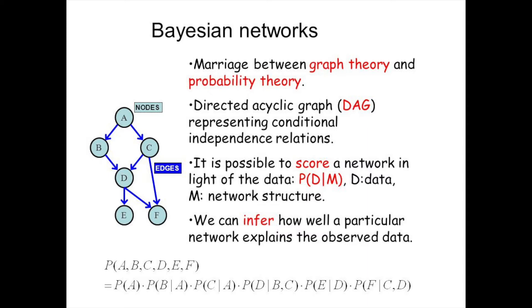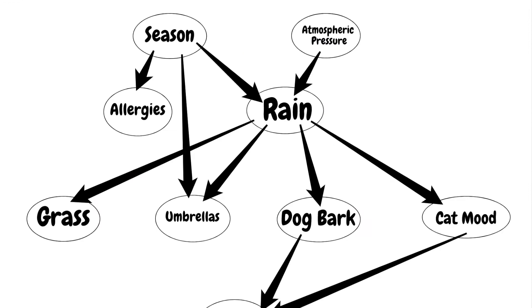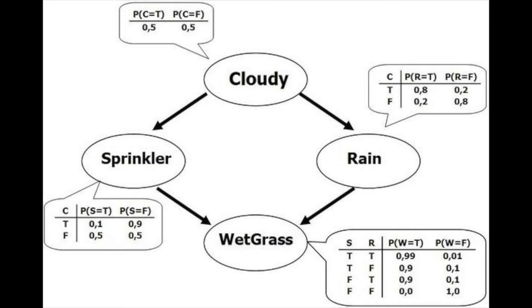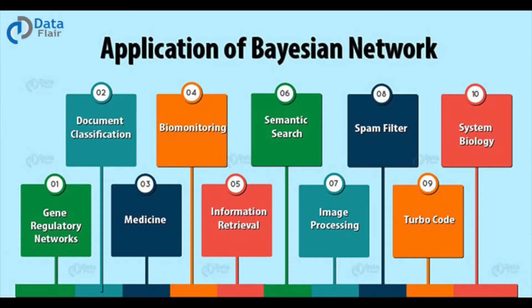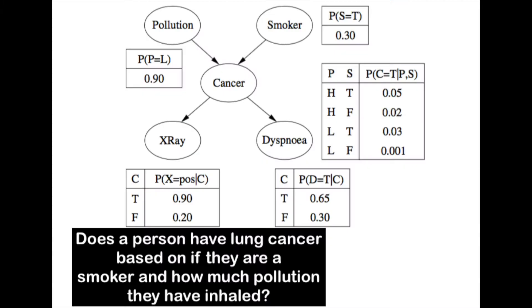They create optimized and efficient algorithms that can run on these graphs and give the solutions we need to our complex problems. As researchers and engineers get better at understanding and optimizing graph theory, machines will get better at making decisions on their own and taking inputs they've never seen before and creating relationships to prior knowledge stored in their graphs.